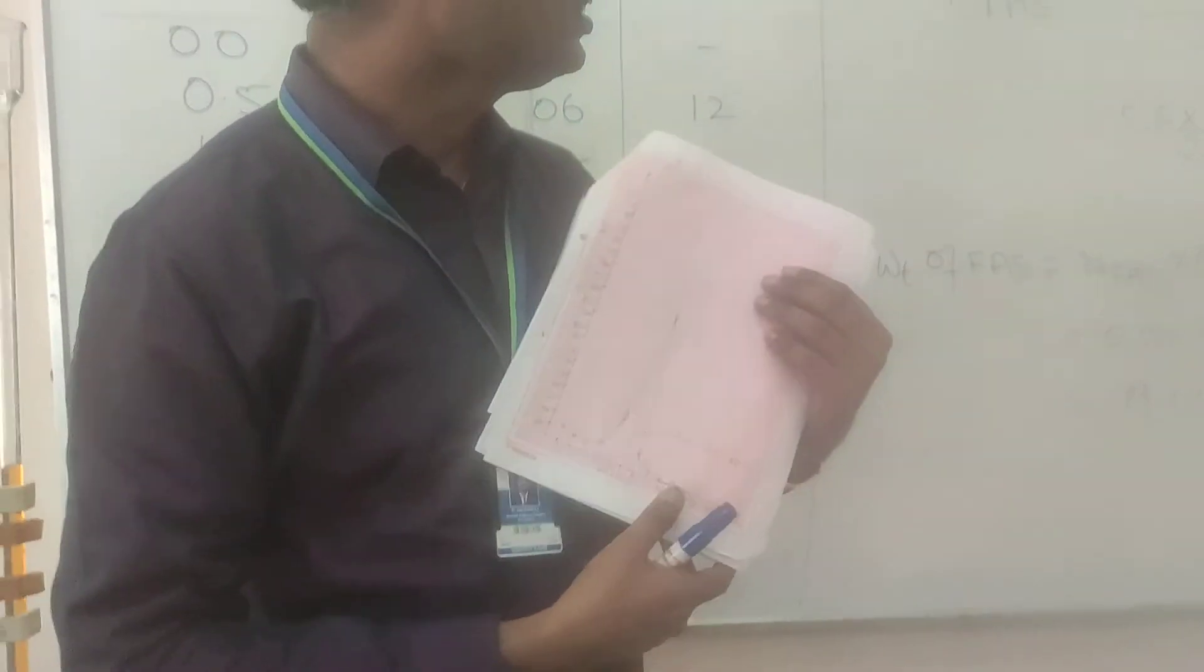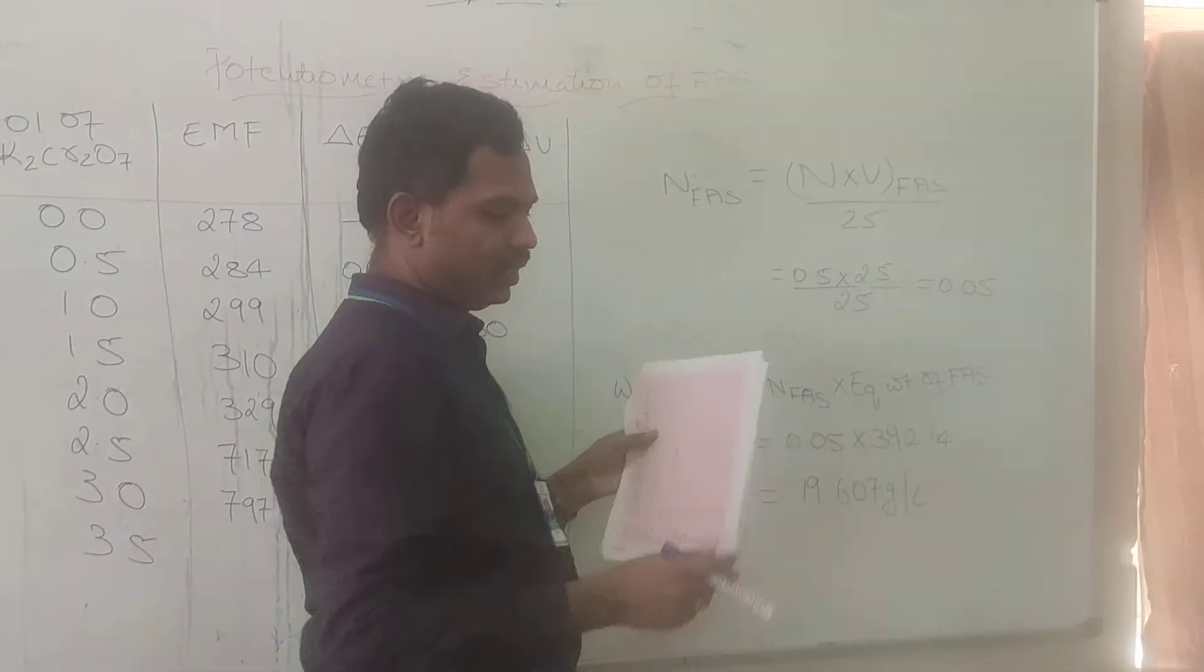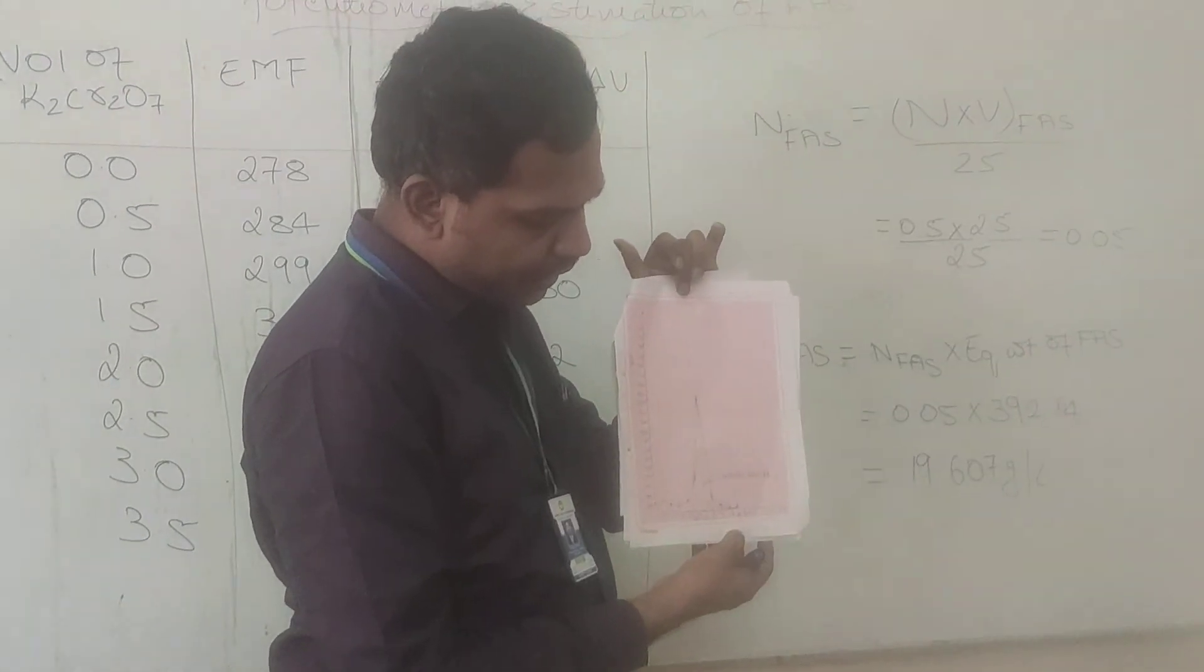From the graph, it is very clear that the volume of K₂Cr₂O₇ required is 2.5 ml. This is the picture of graph we get.